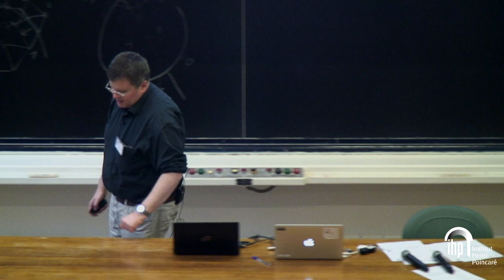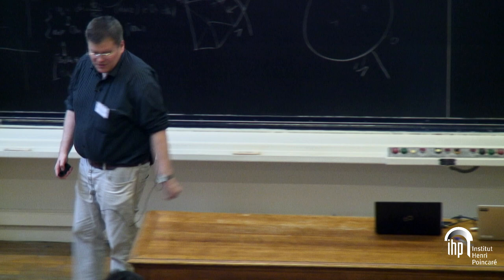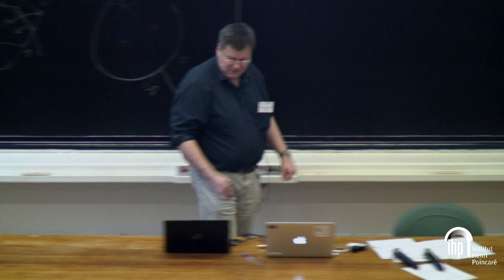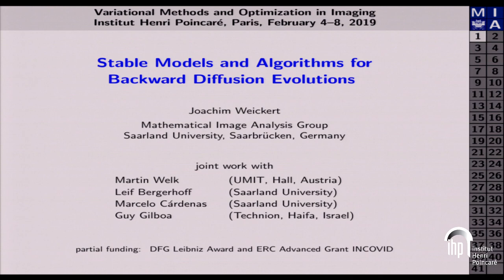We tried to construct a backward diffusion process using negative diffusivities everywhere, and the hope was that if everybody is a criminal, they behave nicely. We couldn't come up with any reasonable results at that time, but 14 years later I'm happy to report that we have found something. This is joint work with Martin Welk in Austria, Leif Bergerhoff, Marcelo Cardenas from my group, and Guy Gilboa from the Technion in Israel.